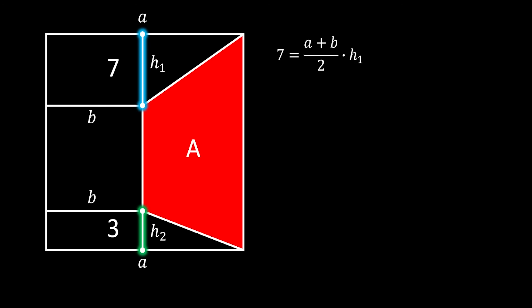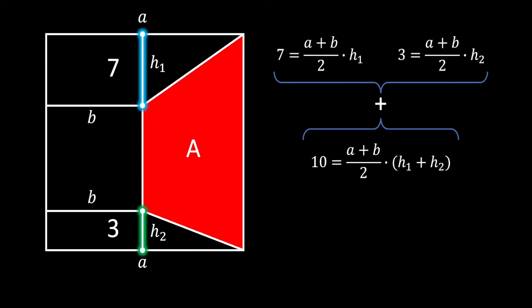Let's label the sides of the big square as a and the small square as b, just as before. We label the height of the top trapezium as h1 and the height of the bottom trapezium as h2. The top area equals 7 and equals (a + b) / 2 times h1; the bottom area equals 3 and equals (a + b) / 2 times h2. Adding those two areas gives 10 equals (a + b) / 2 times (h1 + h2).